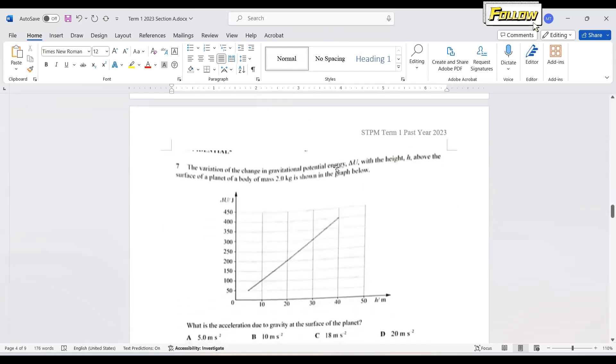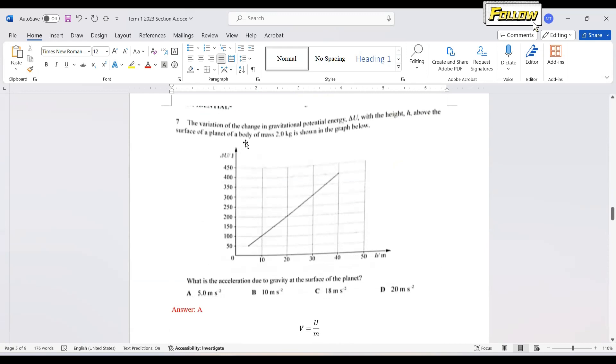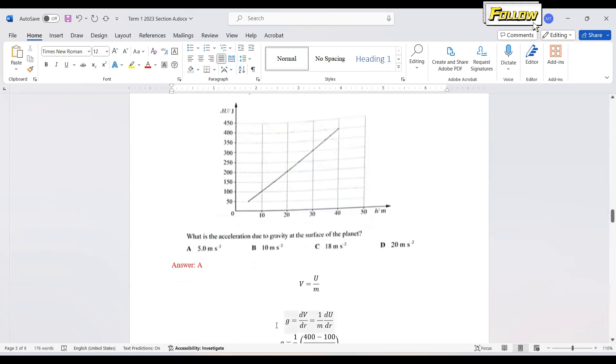We move on to question 7. The version of the change in gravitational potential energy with the height above the surface of a planet of a body of mass 2 kg is shown in the graph. What is the acceleration due to gravity at the surface of the planet? You need to review back each of the equations learned in this chapter. The g can be linked to U through the dV/dR.